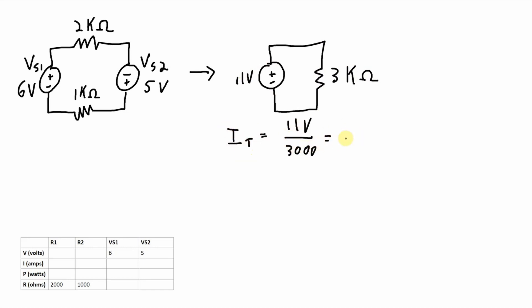That's 3.67 milliamps. And because it's a series circuit, that's going to be the current through R1, R2, source 1, and source 2. Now we can use that current to calculate the voltage across R1 and the voltage across R2.